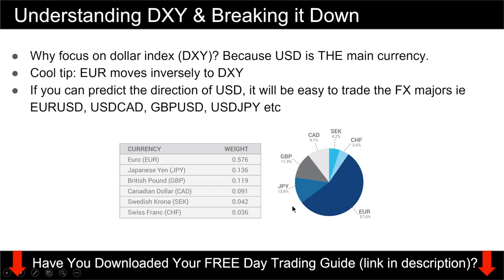DXY has about 57% — more than half — made up of the euro. The index sums to one, and the euro component has a ratio of 0.57576. That is why the euro also moves inversely to DXY — whenever DXY is dropping, the euro is going up.